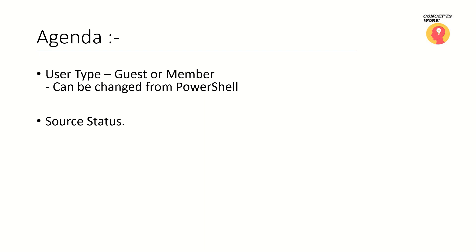The second thing we are going to talk about is the source status. This is basically an attribute or property which we can check on portal.azure.com once we navigate to a particular user. This does get changed when you invite a user. When you have added a guest user, the status you will see is 'invited user', meaning the invitation has been sent but not yet redeemed. The moment that user accepts the request, you will see which IDP that user account belongs to — whether it's an external Azure Active Directory account or a Microsoft account.